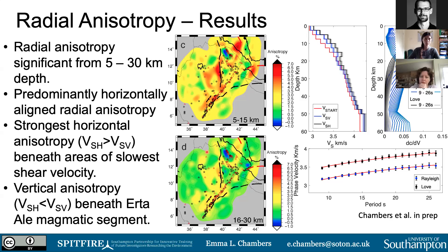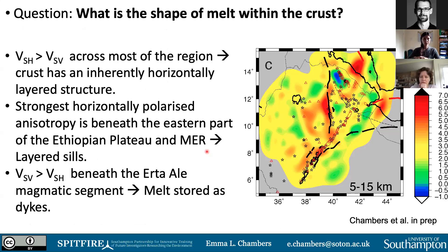Bringing us back to the questions: what is the shape of melt within the crust? The horizontally aligned anisotropy is present across most of the region — certainly beneath the Main Ethiopian Rift and also beneath the Ethiopian Plateau, which we said requires melt. This suggests an inherently horizontally layered structure with sills forming in this region, particularly at mid to upper crustal depths, where we seem to have dominantly horizontally aligned sills.